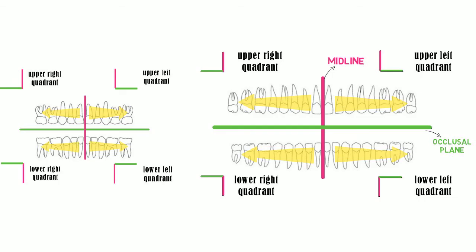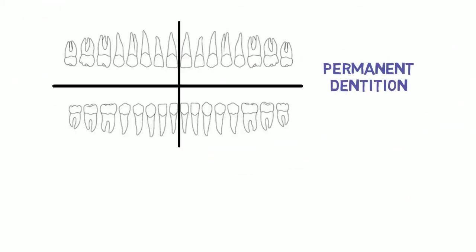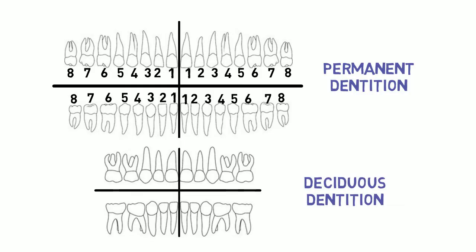This system remains the same in both permanent and deciduous dentition. In permanent teeth, numbers 1 to 8 are used, whereas in primary teeth, English alphabets A to E are used.